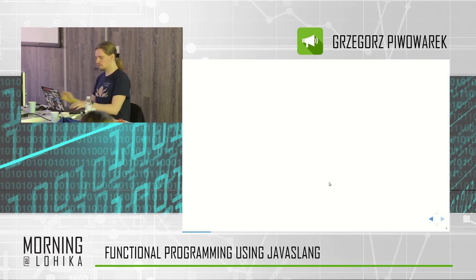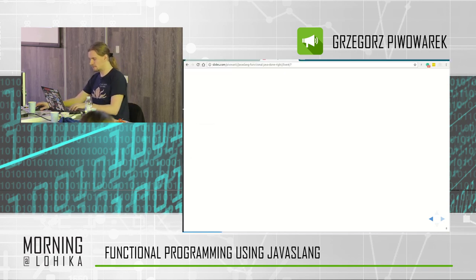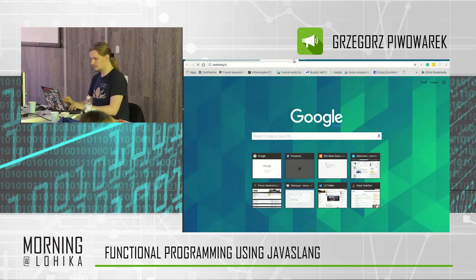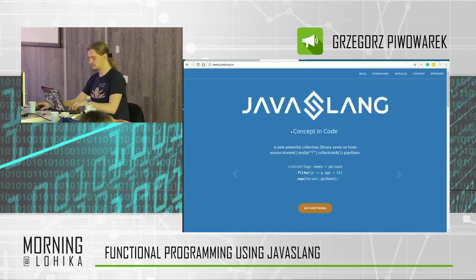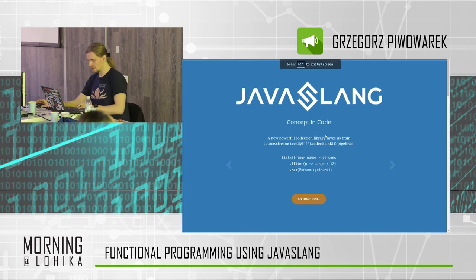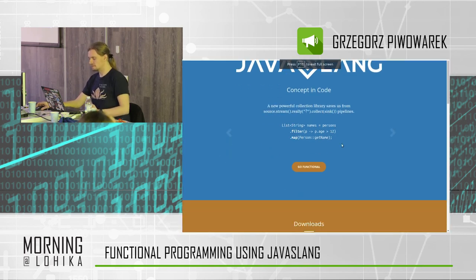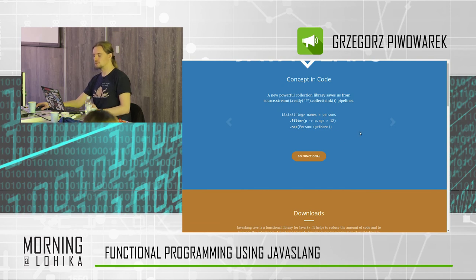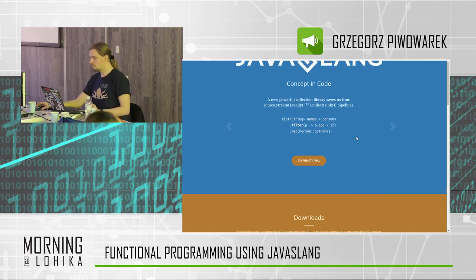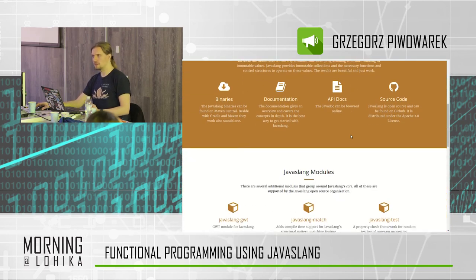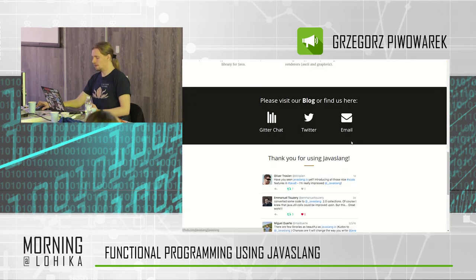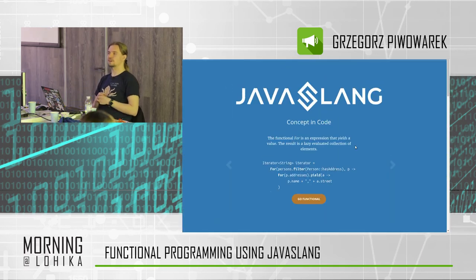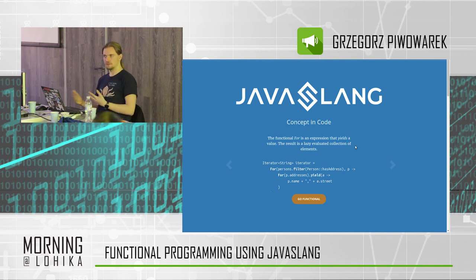Today I'd like to talk about Java Slang. Java Slang was a project at javaslang.io — it's a project that brings as much as possible functional goodies to Java. What's here is a whole new collections API where those collections are persistent and fully immutable. You have much more functional control structures: besides getting Optional and streams, you get Lazy, Validation, Either, Try, and a few more.